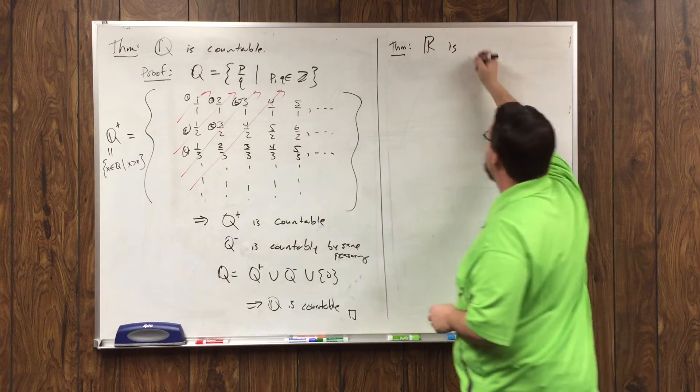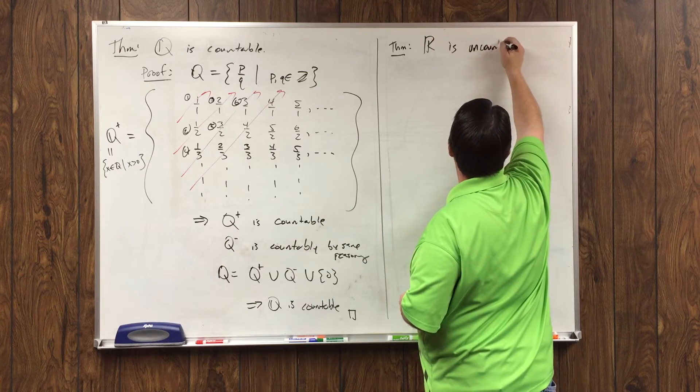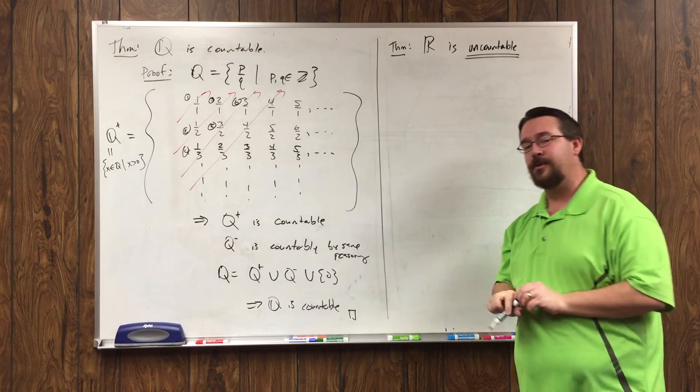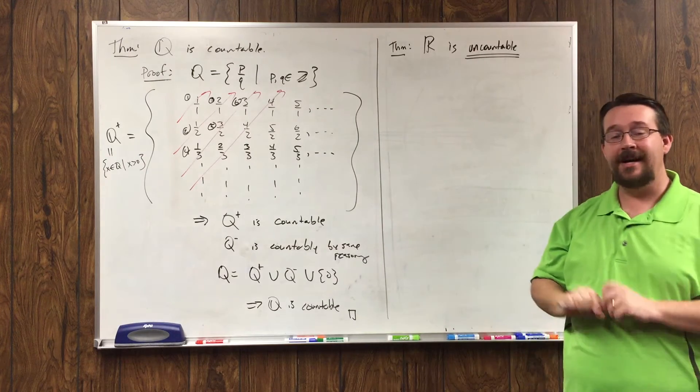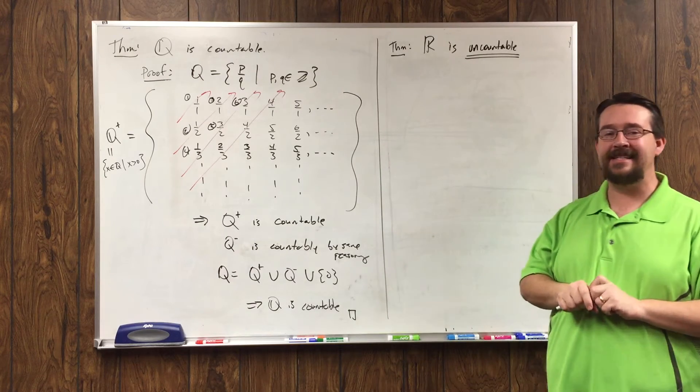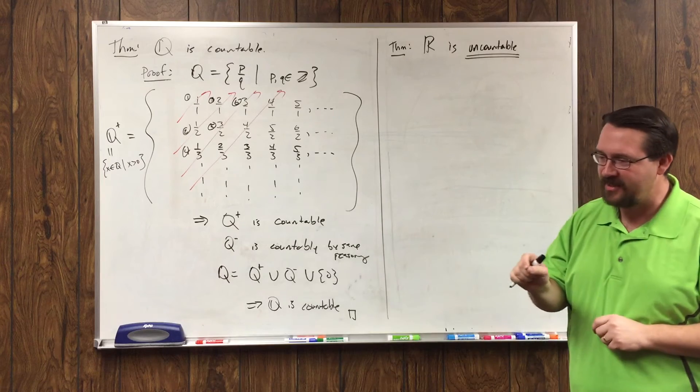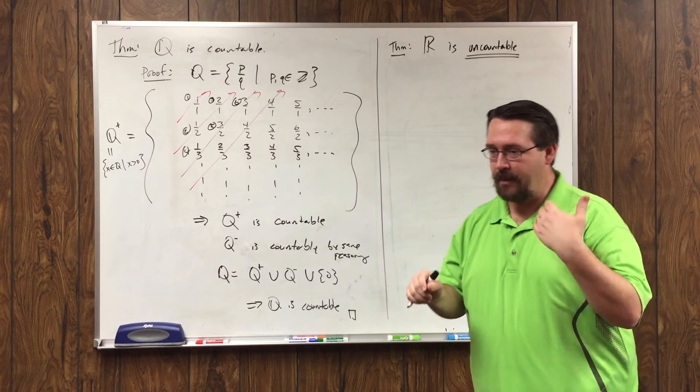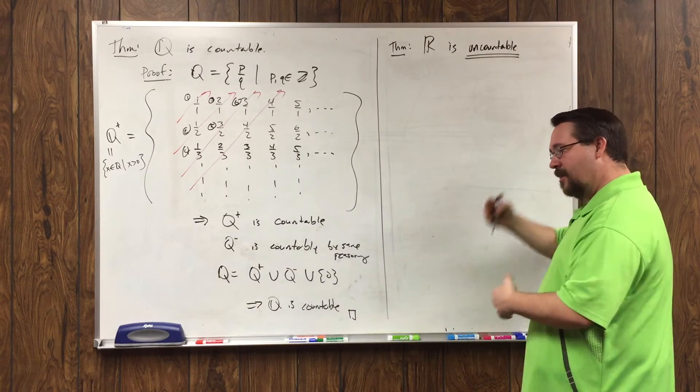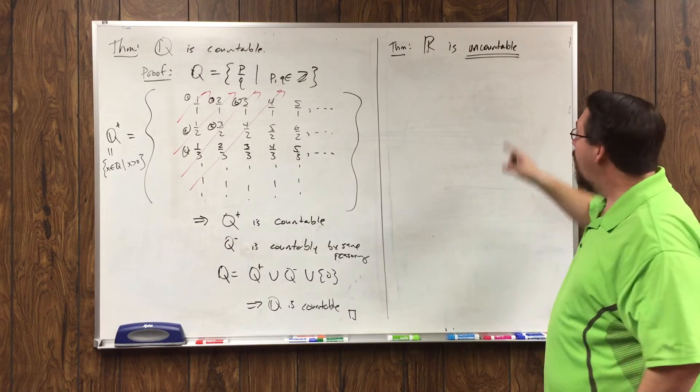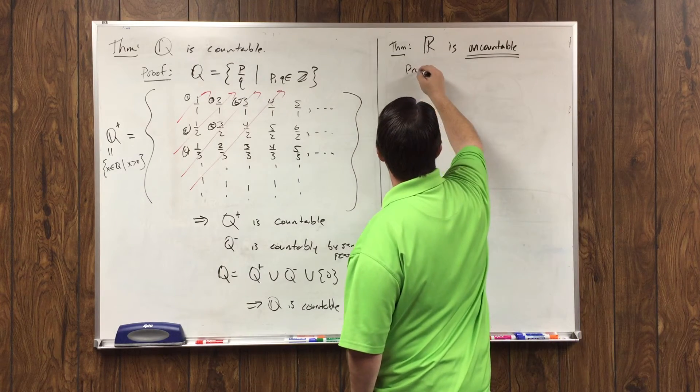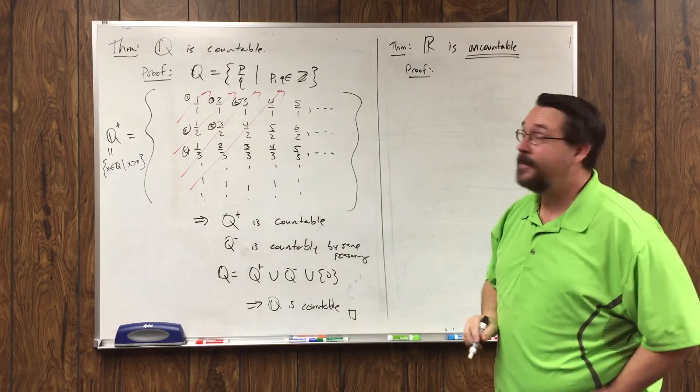There is such thing as an uncountable set. There is a set so large that we cannot list its elements. We cannot find a bijective mapping from N onto that set. We cannot find even a surjective mapping from N onto that set. R is uncountable. And I love this proof, by the way. This is a nifty little trick here.